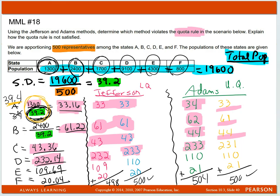If I look at the other ones, 109.69, that means it had to be either 109 or 110. 109 is a lower quota, 110 is the upper quota.